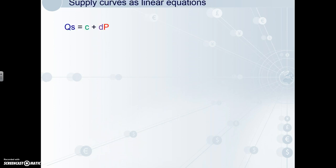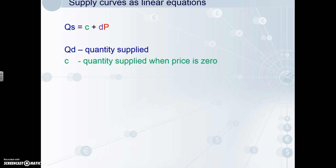Now, supply curves as linear equations. This is an example of what a supply curve equation looks like: QS is quantity supplied, C is the quantity supplied when price is zero, and D is the slope of the supply curve. As we know, supply curves have a positive slope due to the positive relationship between price and quantity supplied — hence this is a positive number. P, again, is price. Now let's plot the supply curve.